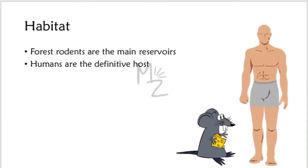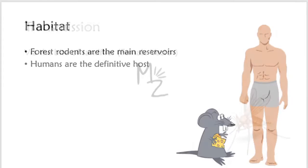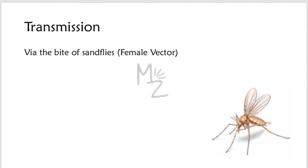Regarding habitat, forest rodents are the main reservoirs and act as intermediate hosts, transferring the infection to humans, who are the definitive hosts. The infection that occurs with significant signs and symptoms in humans is called Leishmaniasis. Transmission occurs via the bite of sand flies, the female vector.